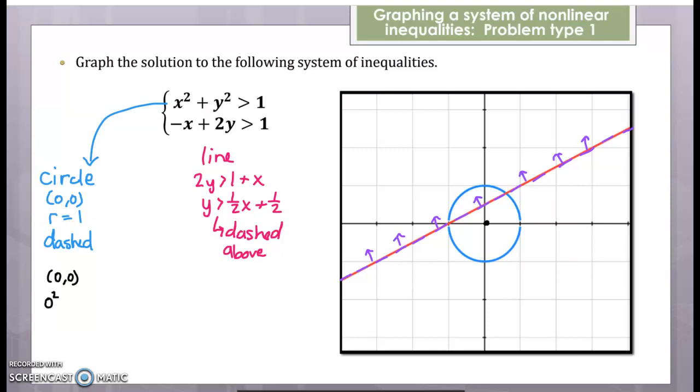So this is 0 squared plus 0 squared is 0 greater than 1, false. So the inside the circle didn't work. So it's got to be outside the circle.